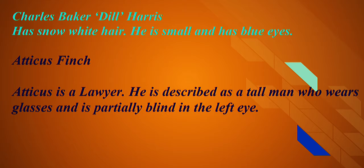We know that Atticus is brave because he shoots a rabid dog. In addition to that, we also know that Atticus is a humble man. We could conclude that Atticus is humble based on the fact that he refused to tell his children about his rare talent. That confirms that Atticus is very humble. We also know that he's a very civilized individual who does not find the idea of killing animals appealing, and that is an indirect characterization for Atticus Finch.